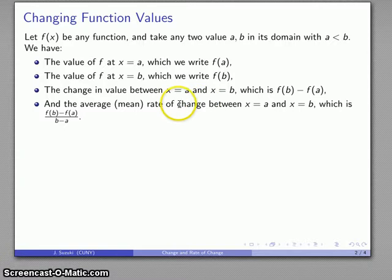Here's a useful thing to remember: Rate and ratio and rational number all come from the same root. They all refer to this idea of a quotient of two things. So here we have the quotient of the change in value, f(b) minus f(a), and the interval over which that change occurred from x equals a to x equals b.